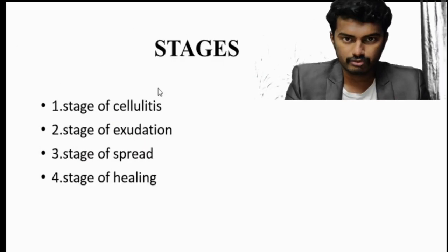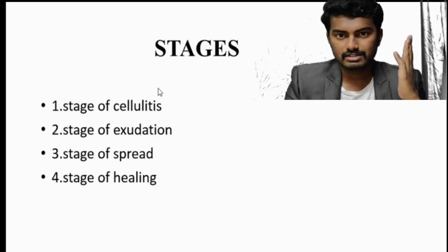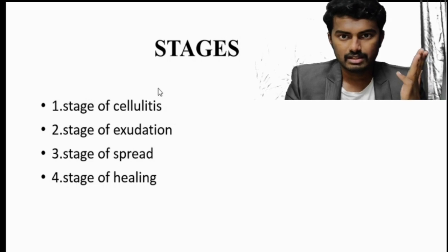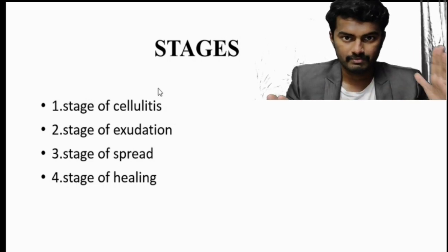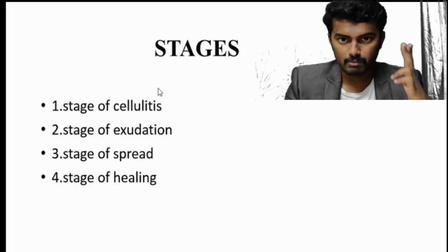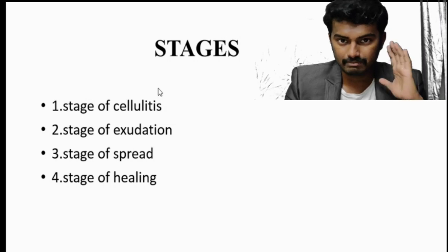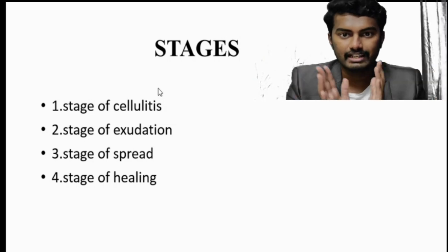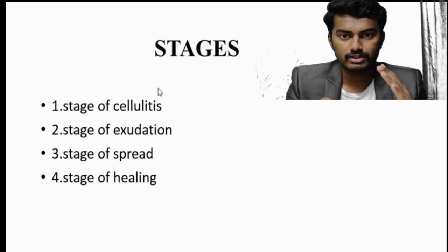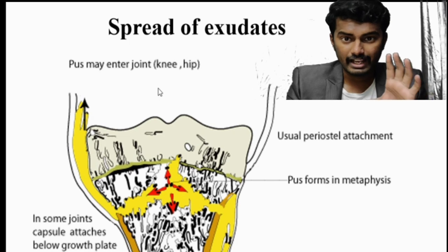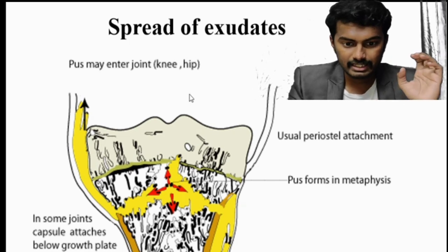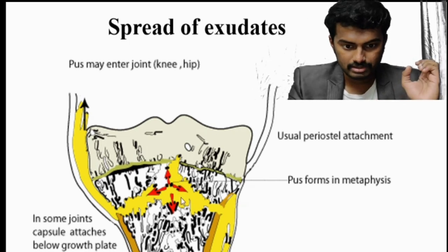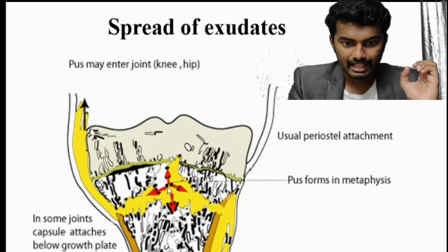There are four stages of osteomyelitis: Stage 1 is cellulitis with no bony destruction; Stage 2 is exudate formation — essentially pus; Stage 3 is the spread of pus escaping from the bone through various routes; and Stage 4 is the stage of healing.